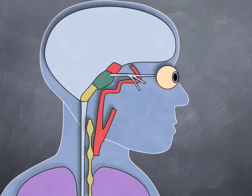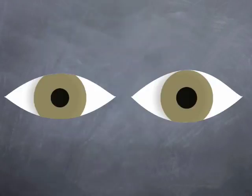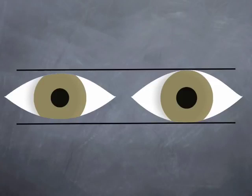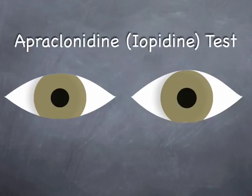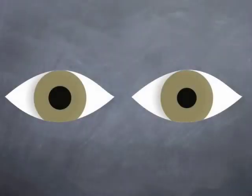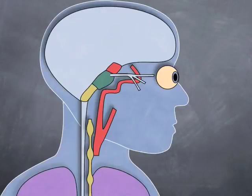Damage along this pathway is termed a Horner's syndrome and features a small pupil or miosis, slight ptosis and loss of sweating or anhidrosis on one side of the face. Confirmatory testing with apraclonidine drops reverses the anisocoria and often the ptosis too. See the video on Horner's syndrome for more details.